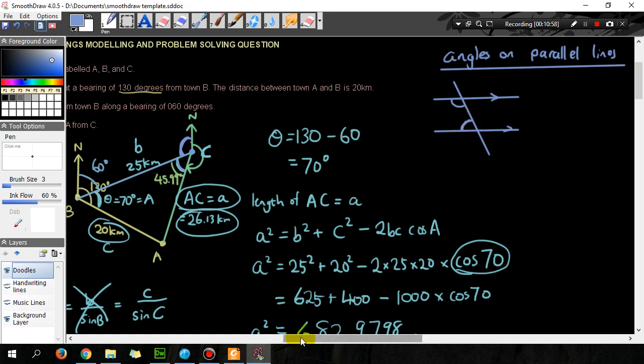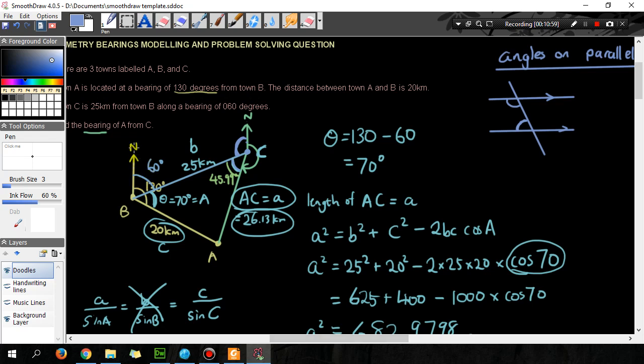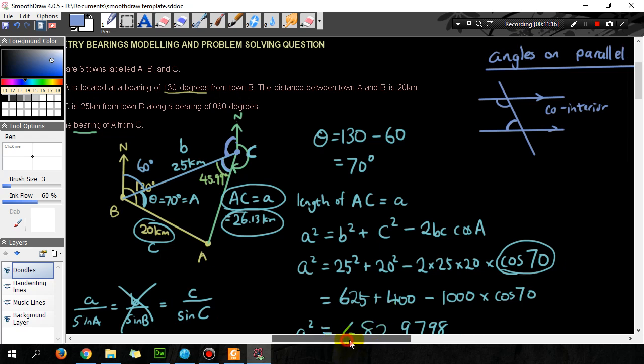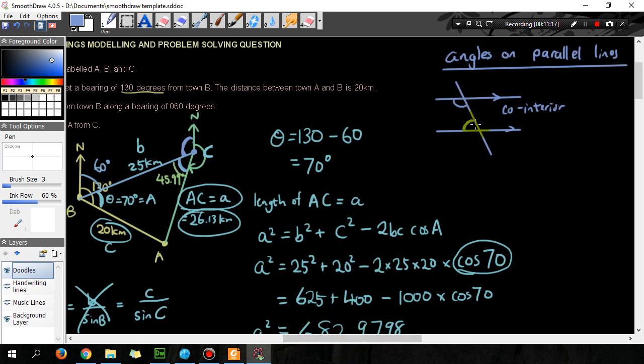So we got parallel lines here. The north and the north, these are parallel. And these two angles are what we call co-interior angles. Co-interior angles on the same side of the transversal, enclosed by the parallel lines, sum 180 degrees.